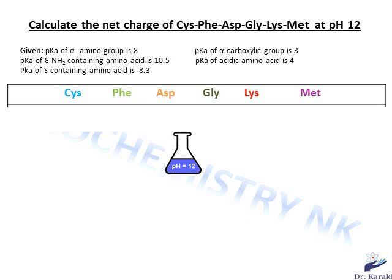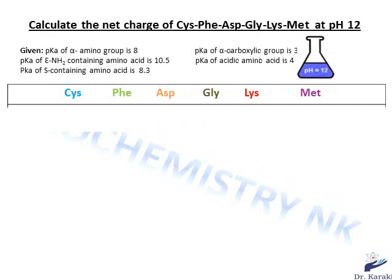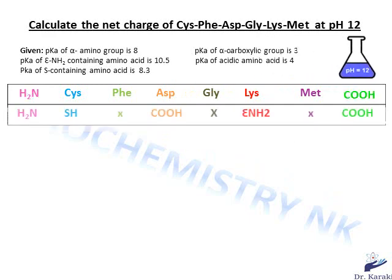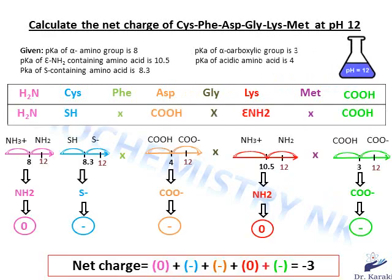Now I want you to calculate the net charge of the same polypeptide chain but at pH equal to 12. Grab a scratch paper, copy the peptide chain and the pKa values in front of you, pause the video, and when you finish you can play it again to see the detailed answer. The net charge will be equal to −3.